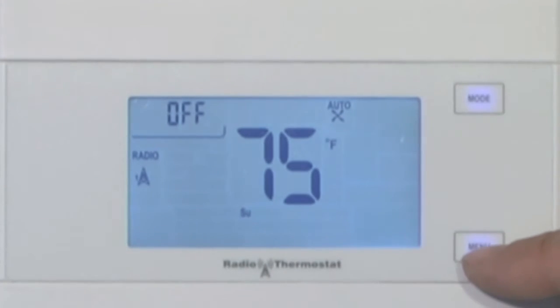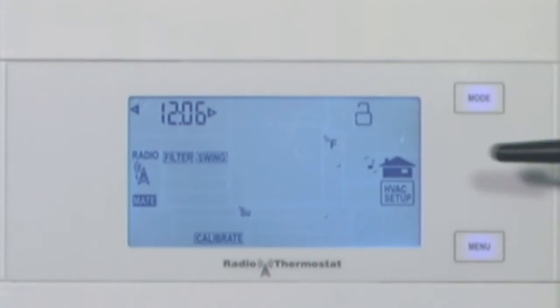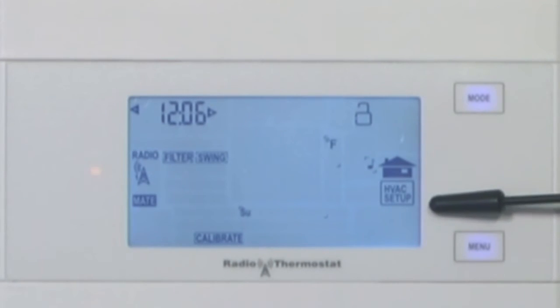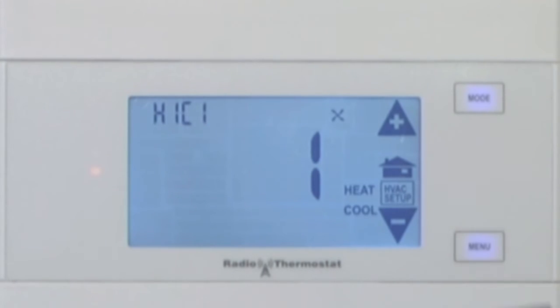Then you go to menu and if you notice right underneath the home button, there's a little block that says HVAC setup. Go ahead and press that.